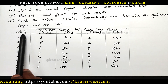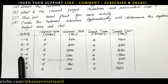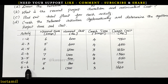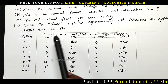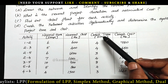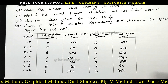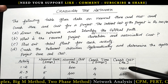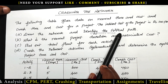And the last one: crash the relevant activities systematically and determine the optimum project time and cost. The activities given in the problem are: activity 1 to 2, 2 to 3, 2 to 5, 2 to 4, 3 to 5, 5 to 6 and 4 to 6. These are the various activities with normal time in days, normal cost in rupees, crash time in days and crash cost in rupees. Now we are going to do each and every calculation separately. Let's see the first one: drawing the network and identifying the critical path.